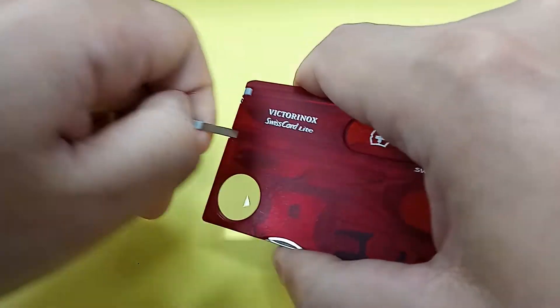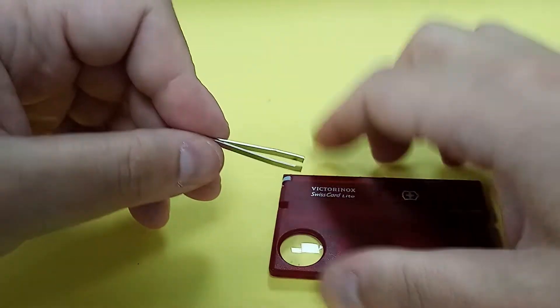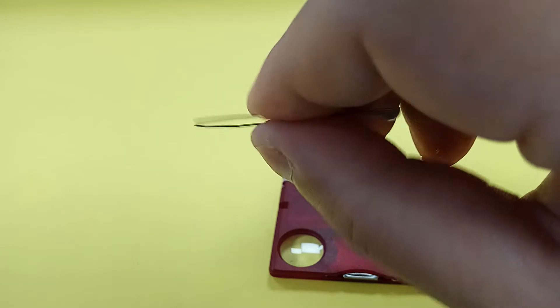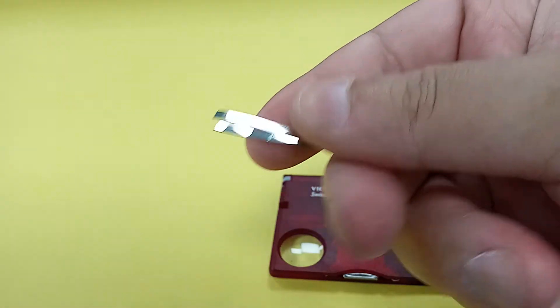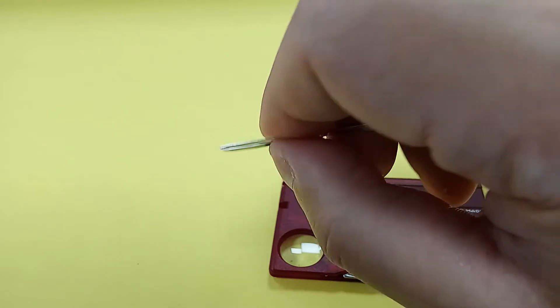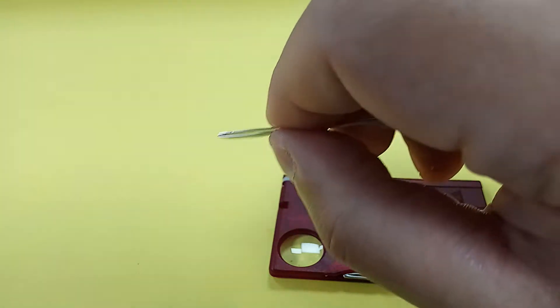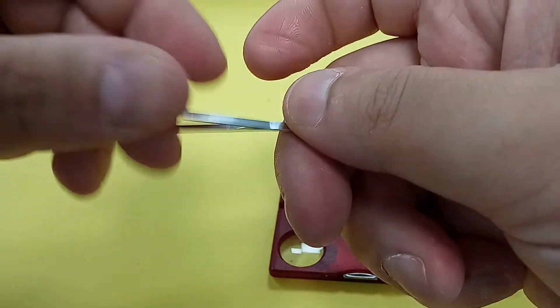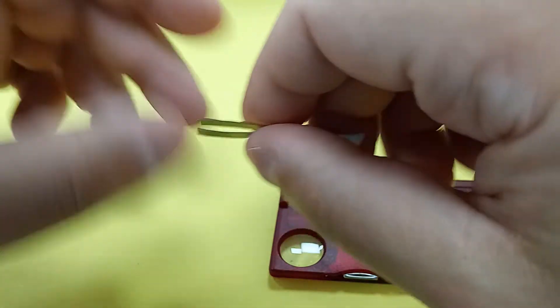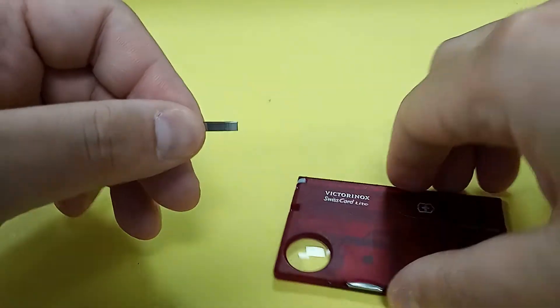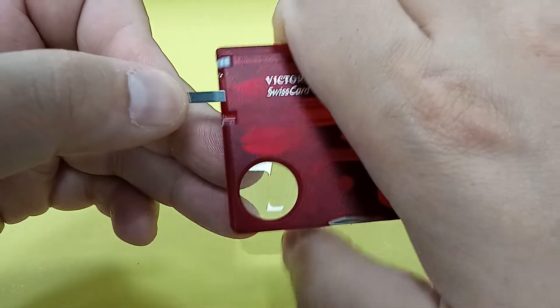Down here, tweezers. Excellent Victorinox tweezers, absolutely excellent. Yes, these are the same size tweezers that you'll find on a Victorinox Classic SD. They just work very well. No surprises. They're fantastic tweezers.